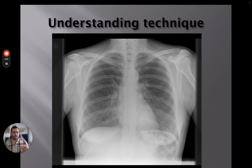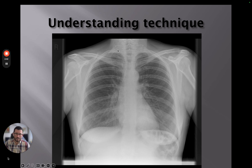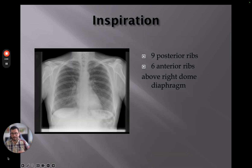We're seeing a lot of interposition of anatomy on top of each other, and we need to appreciate what we're looking at and what that means for the patient. For the anterior ribs, we can count them here: one, two, three, four, five, six — and possibly a seventh. The posterior ribs are these more horizontally oriented ribs coming away from the spine: one, two, three, four, five, six, seven, eight, nine, ten. We can infer that this patient has taken a very good inspiration.